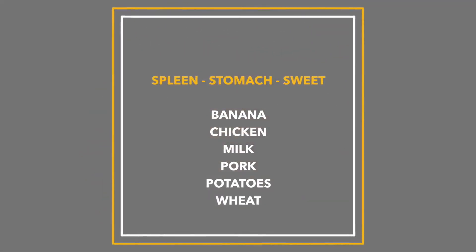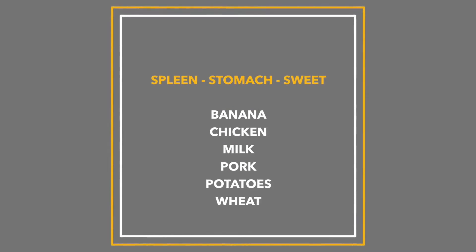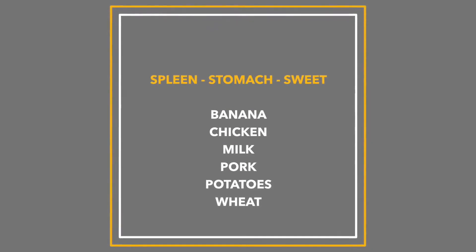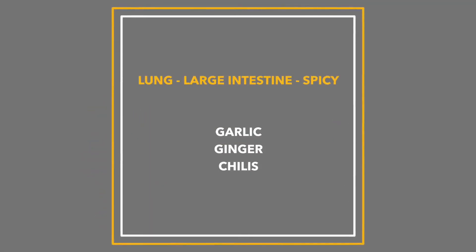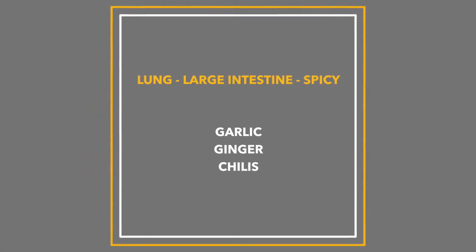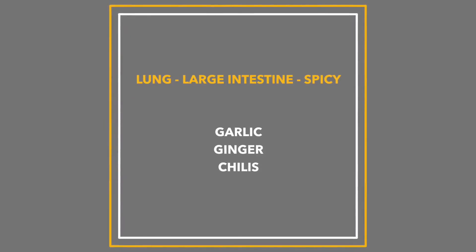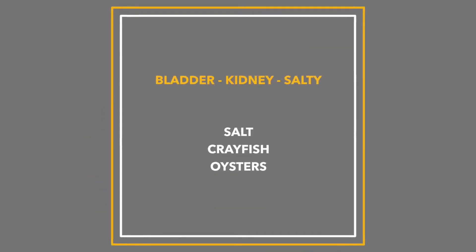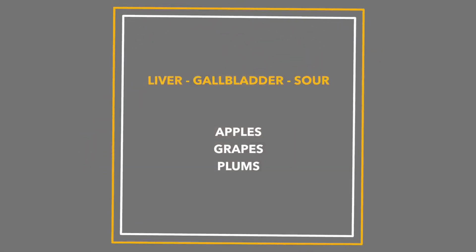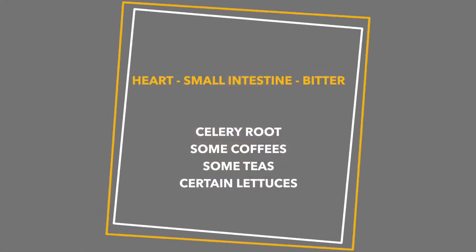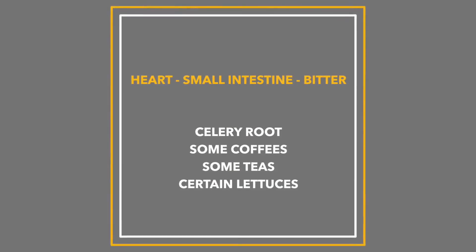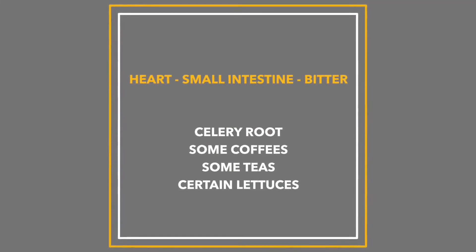When we expand this and associate certain flavors and foods with certain organ systems, it looks like this: The spleen and stomach are associated with sweet, and foods like bananas, chicken, milk, pork, potatoes, and wheat. The lung and large intestine are associated with spicy or acrid, like garlic, ginger, or chilies. The kidney and bladder are associated with salt, like salt, crayfish, or oysters. The liver and gallbladder are associated with sour, like apples, grapes, plum, and some cheeses. The heart and small intestine are associated with bitter, with things like celery root, coffee, some tea, and some lettuces.